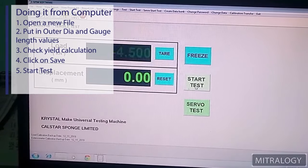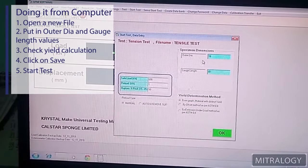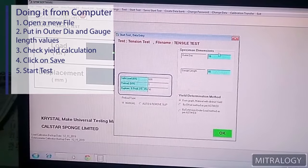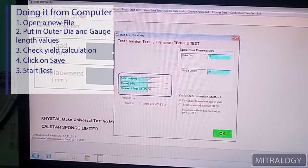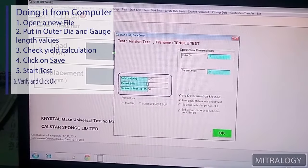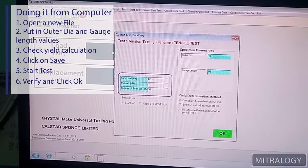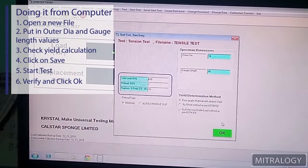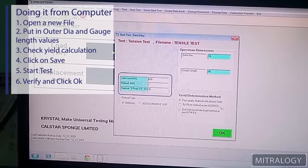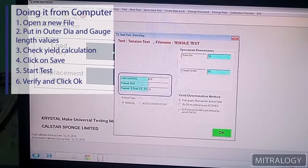Now we will do the start test. In there, this outer diameter is also written as 16. Gauge length is 80. Everything is okay. Safe load is 600 kN. That is alright. And we will make the yield by graph. So this is also fine.